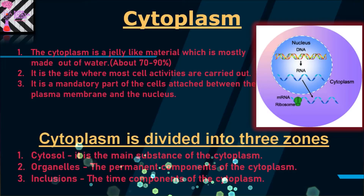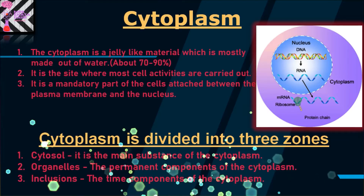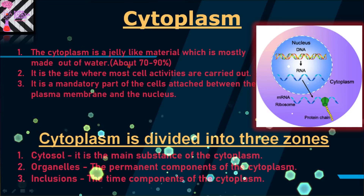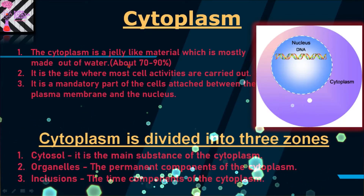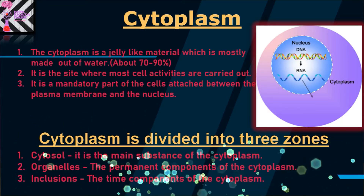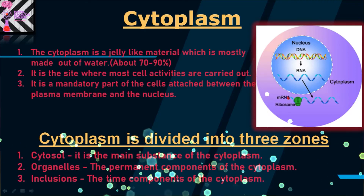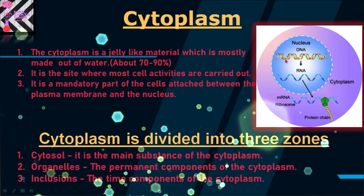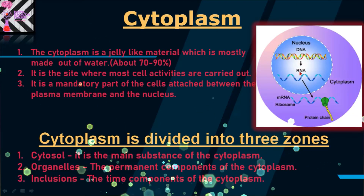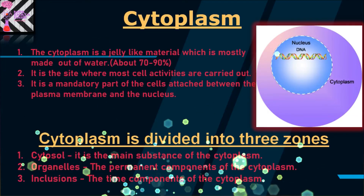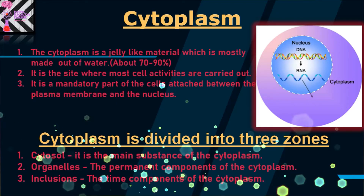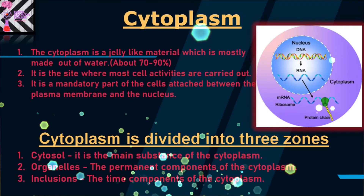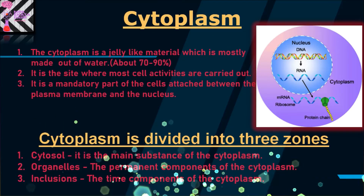So, what is the cytoplasm? The cytoplasm is a jelly-like material which is mostly made out of water — about 70 to 90% water. You can see here that this whole part is cytoplasm. I have told you about the nucleus where DNA and RNA, the genetic material, exist. This part is filled with a fluid-like structure and it is known as cytoplasm.